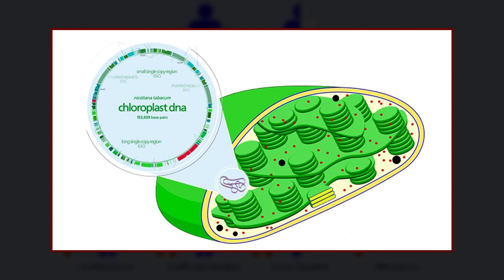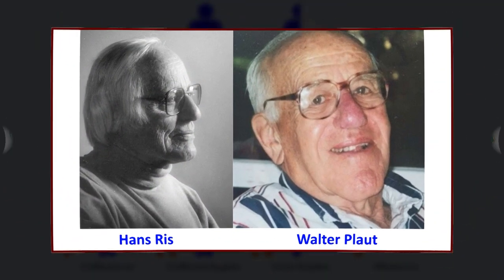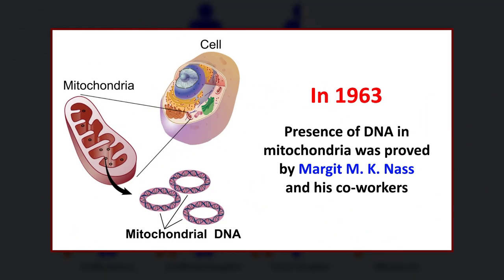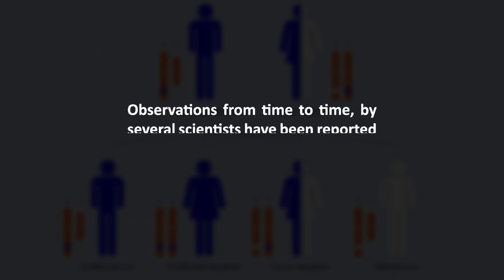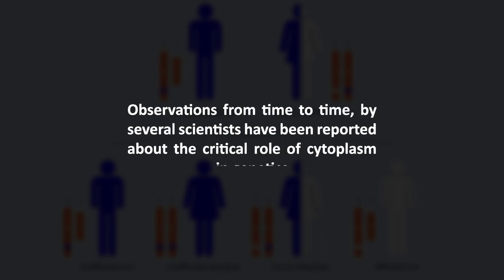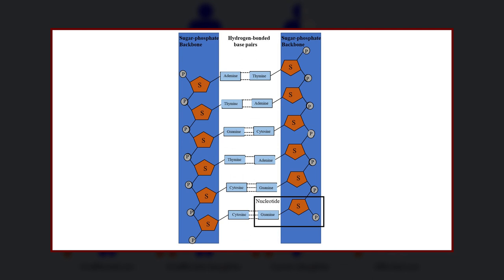The presence of DNA in chloroplasts in plant cells was first demonstrated in 1962 by Rys and Palt, while a year later in 1963, the presence of DNA in mitochondria was proved by Margit M. K. Nass and co-workers. Further observations by several scientists have reported the critical role of cytoplasm in genetics. Although chromosomal genes specify the vast majority of mitochondrial proteins, the mitochondrial genome has considerable variability and mutates more readily than chromosomal genes, in part due to poor proofreading during DNA synthesis. The resulting mutations are a source of considerable non-Mendelian genetic disease as well as phenotypic variation in normal mitochondrial function.